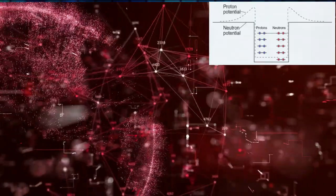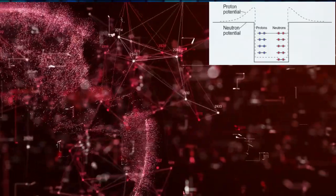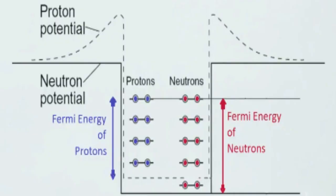The minimum energy configuration consists of a large number of particles filling up their energy levels. Even at zero temperature or at the ground state configuration, the sum of their energies will not be zero.